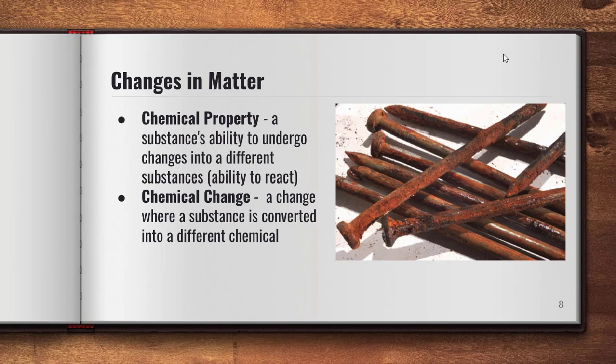A chemical property is a substance's ability to undergo changes into a different substance — different chemicals have different properties that allow them to react under different conditions. A chemical change is a change where the substance is actually converted into a different chemical. Rust is a good example: when iron is exposed to water over time, the water reacts with the iron and produces iron oxide — that's what you see on those rusted nails. A chemical change means the substance is no longer the same substance.